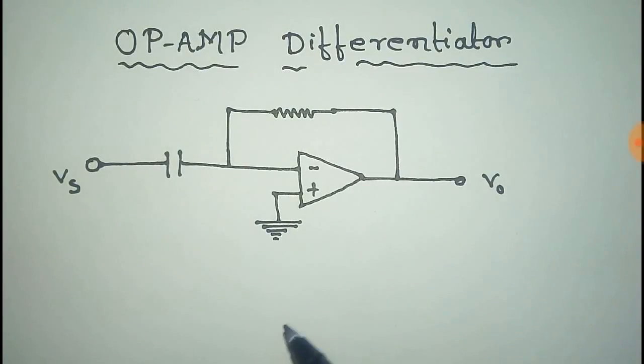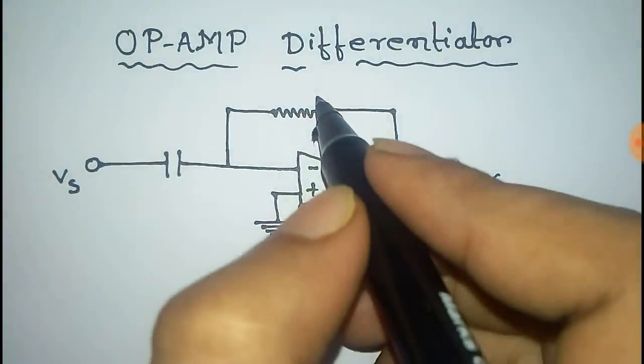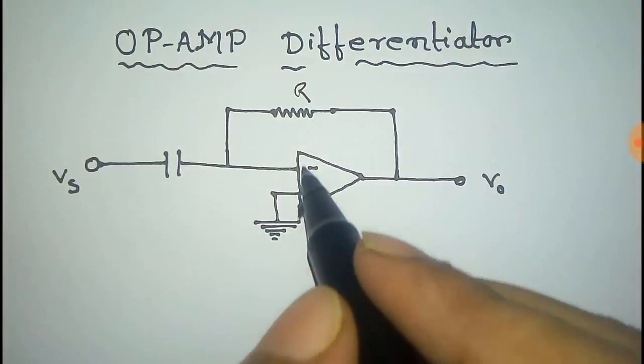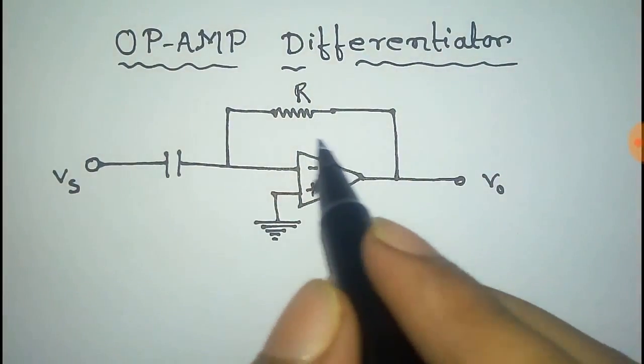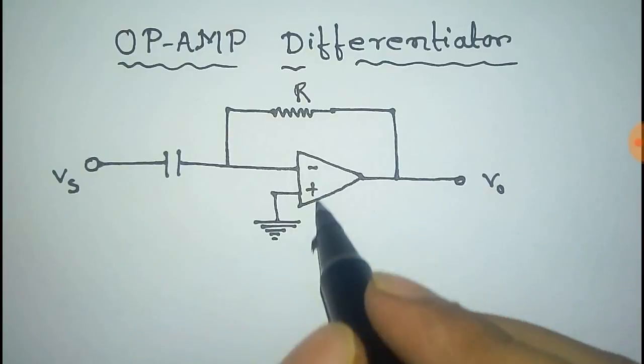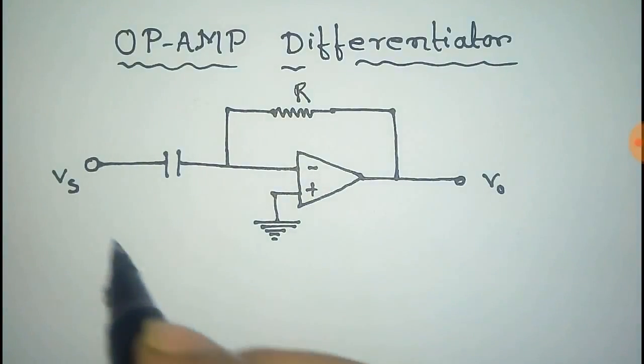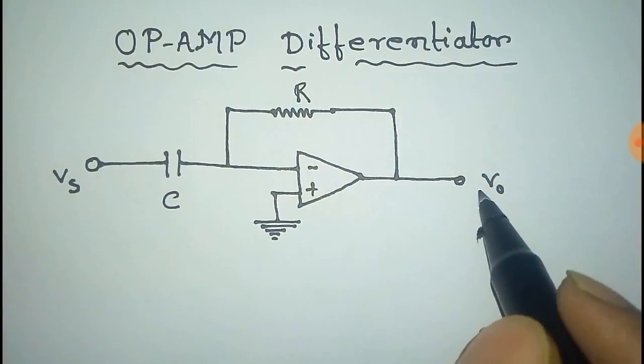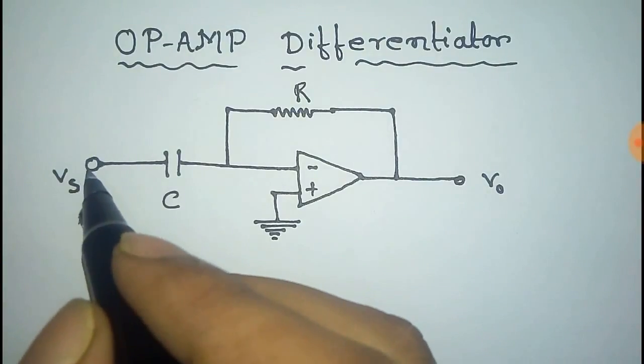This is an op-amp differentiator circuit. This is the resistance R. This is the op-amp with its inverting and non-inverting port. This is the capacitor, this is the output voltage Vo, and this is the input voltage Vs.